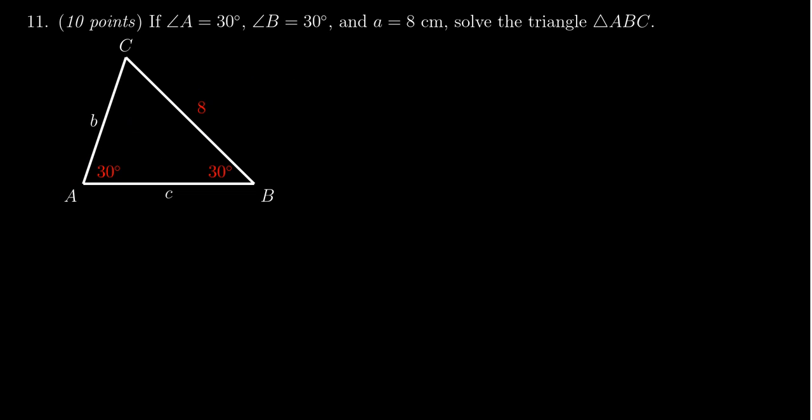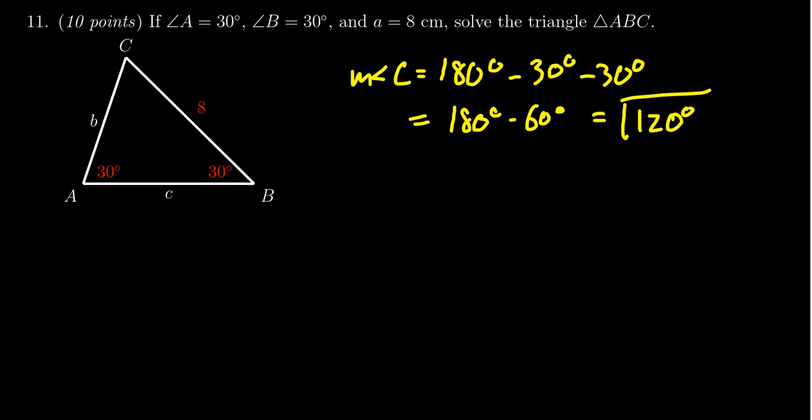The first thing we want to do is figure out what angle C is going to be. The measure of angle C is going to equal 180 degrees minus the measure of angle A, which is 30, minus the measure of angle B, which is likewise 30. 30 and 30 come together to give me 60. If you take that away from 180, you're left with 120 degrees. That's going to be the measure of angle C.